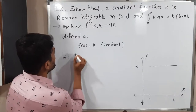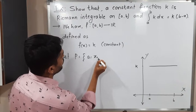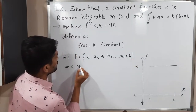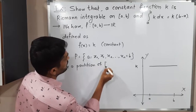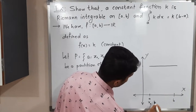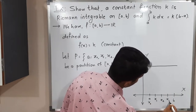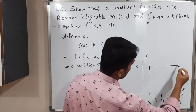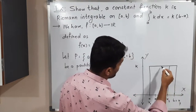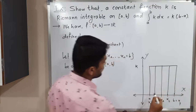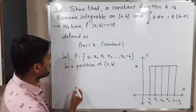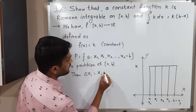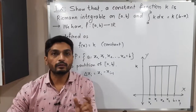Let P = {x₀ = a, x₁, x₂, x₃, ..., xₙ = b} be a partition of [a, b]. Because of this partition, the region will be divided into some sub-intervals. Now, Δxᵢ = xᵢ − xᵢ₋₁, which calculates the length of each sub-interval.